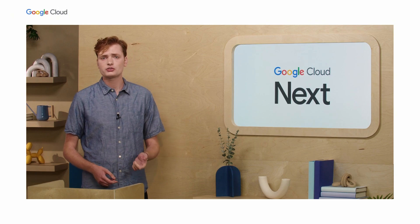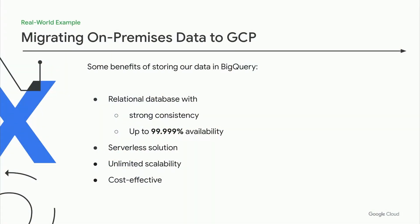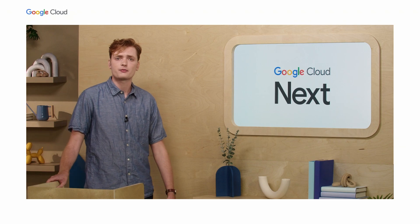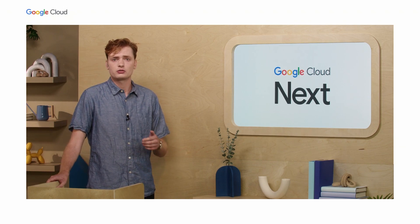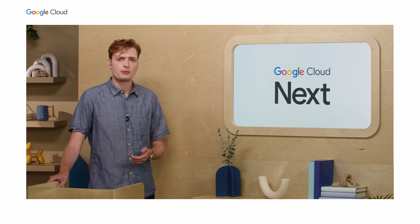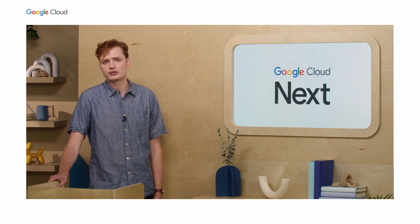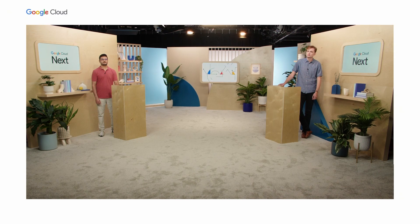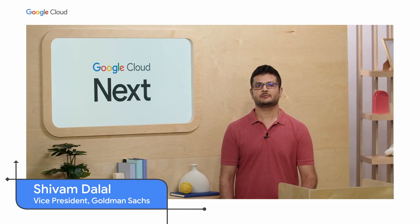Let's use a real-world example to illustrate how we use these preventive security controls. One of our major business use cases for GCP is migrating data from on-premises into BigQuery. BigQuery provides great technical benefits: it's a relational database with strong consistency and up to five nines availability, it's fully managed by Google, has great scalability, and is very cost effective — making it a great fit for our enterprise data warehouse use case. To take advantage of these benefits, we need to address risks associated with migrating data into the cloud. I'll pass it over to my colleague Shivam. Hello everyone, my name is Shivam Dalal and I'm also part of the cloud enablement team at Goldman Sachs.